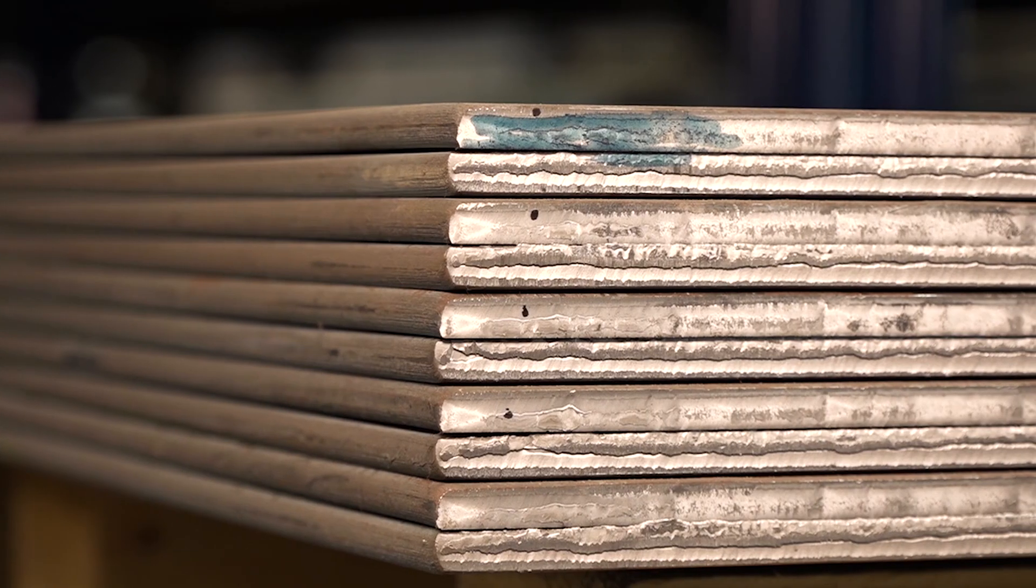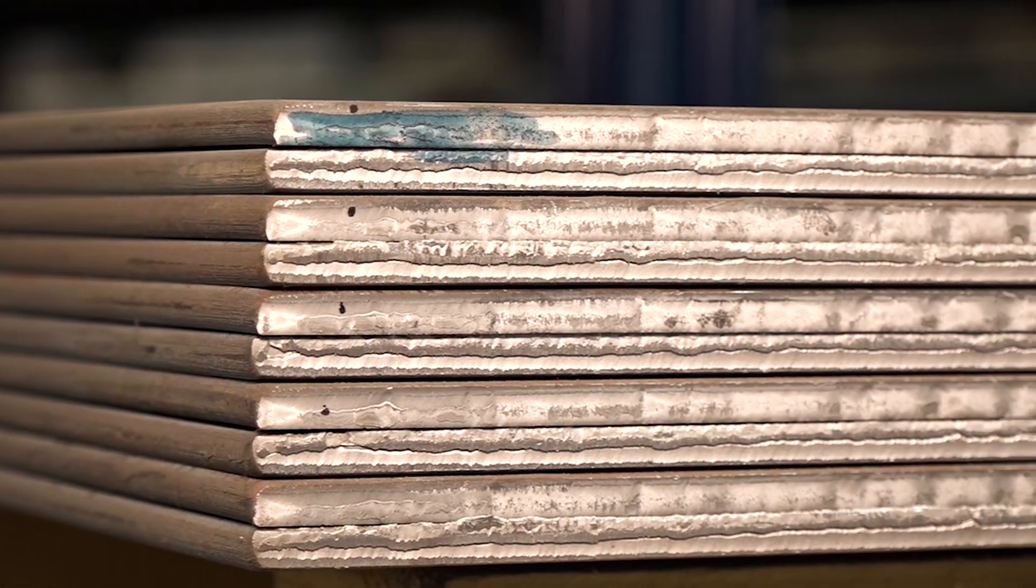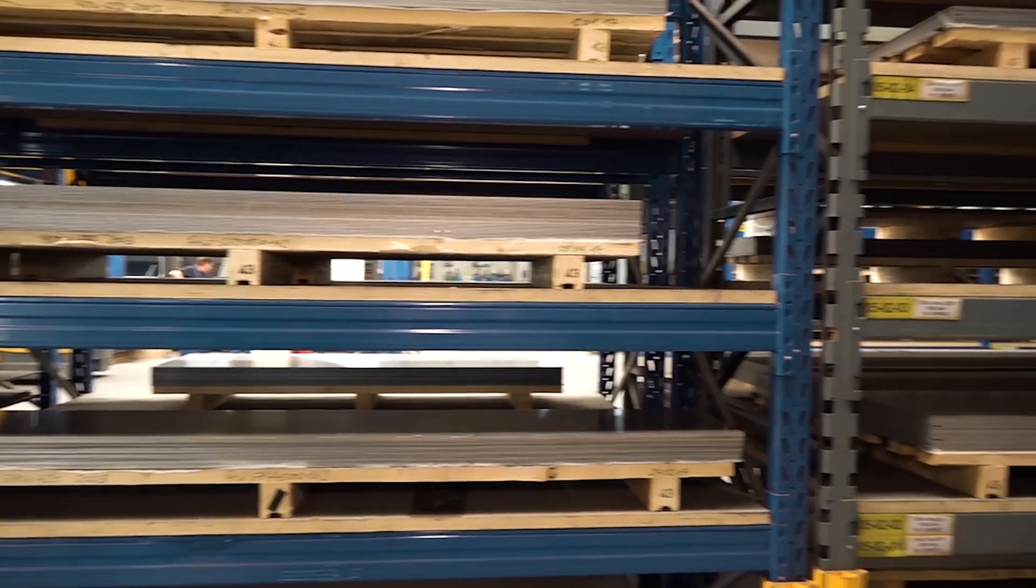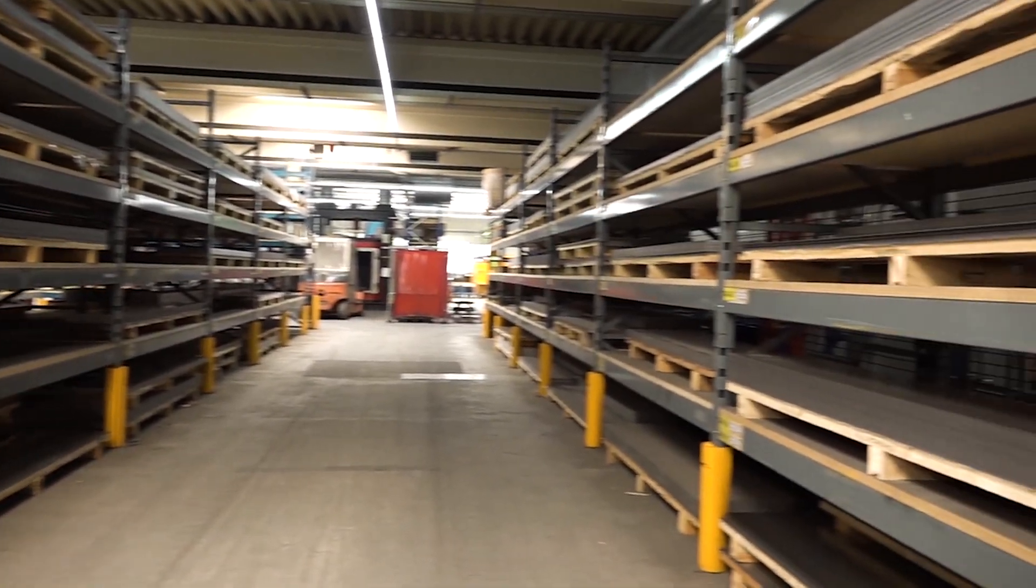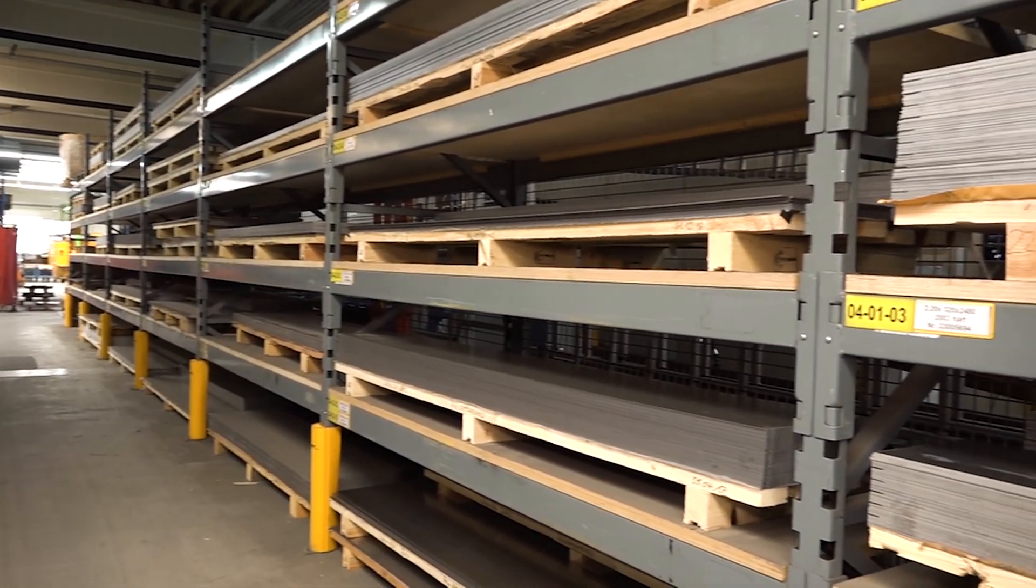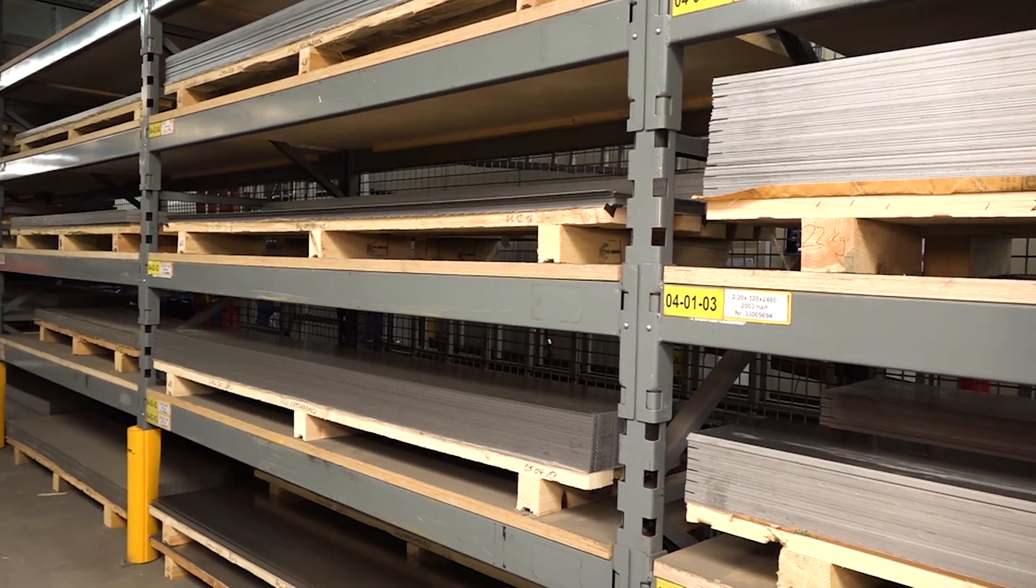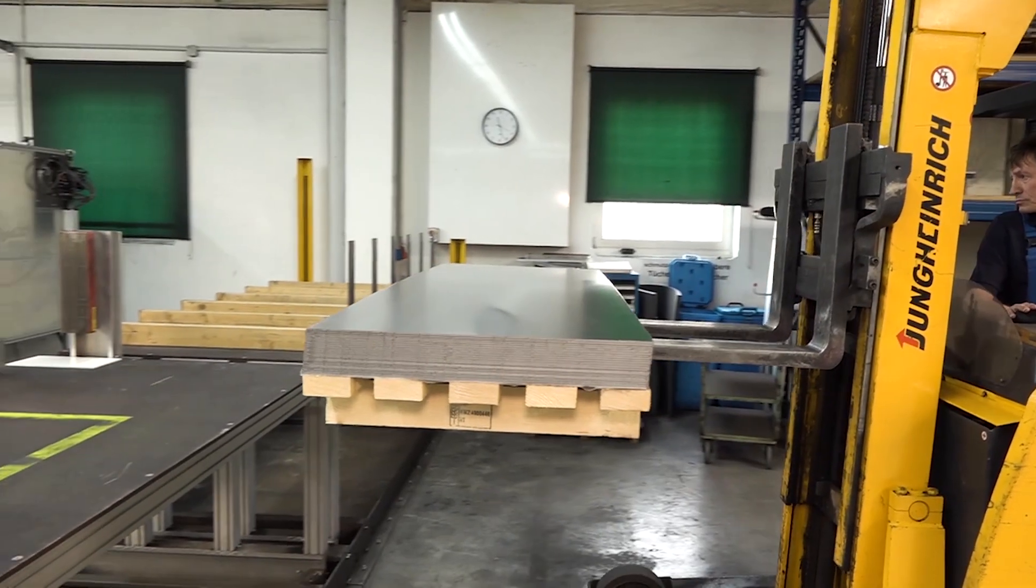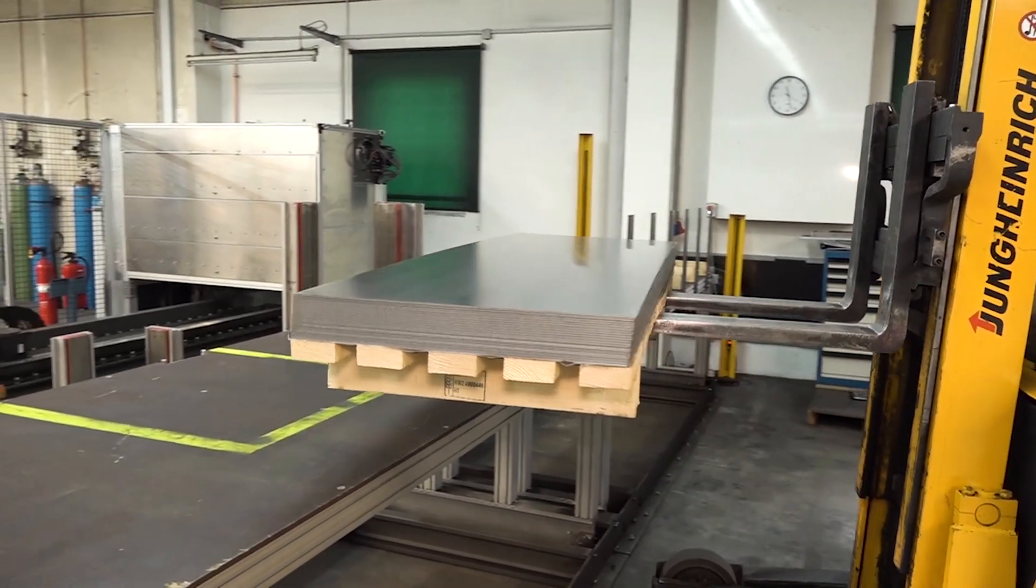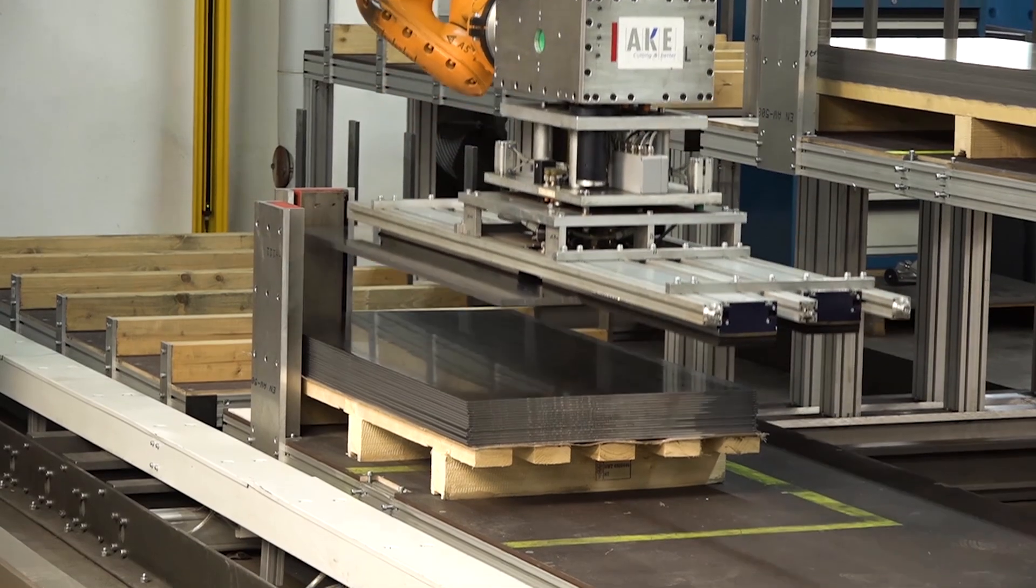After the tool has been designed, the circular saw blade goes into production. Every tool starts in the sheet metal store, where several hundred tons of special steel in a wide variety of sizes, thicknesses, and quality grades are stored. The selection of the right type of steel is a key factor in ensuring that the tool can withstand the high demands of the sawmill.